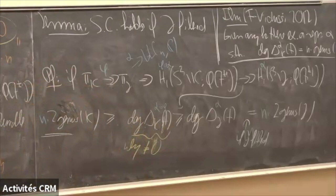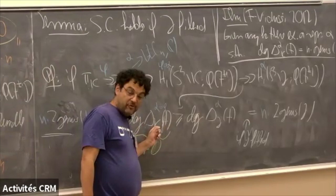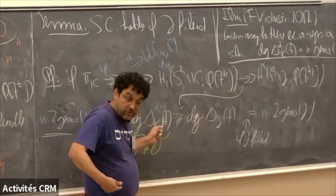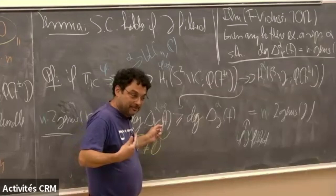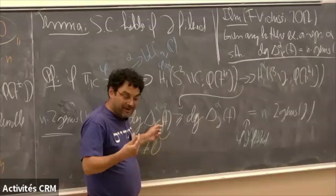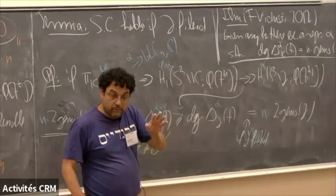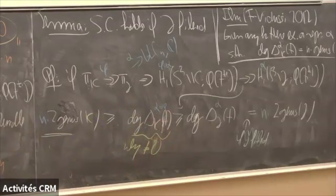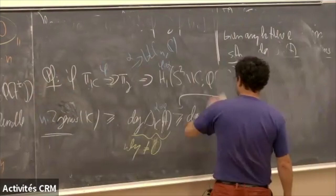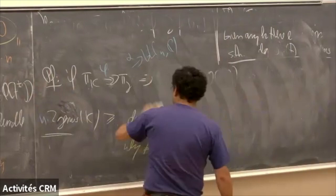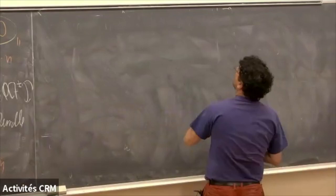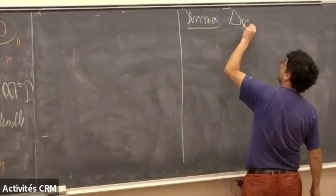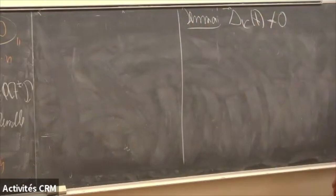For ordinary Alexander polynomials I was already using the fact that they are always non-zero — everybody knows that. But it's worth thinking about why ordinary Alexander polynomials are non-zero. There are many proofs, but let me give you one of the most conceptual ones. I'll erase the twisted material — it won't appear again. Let's prove the lemma: the ordinary Alexander polynomial is non-zero.